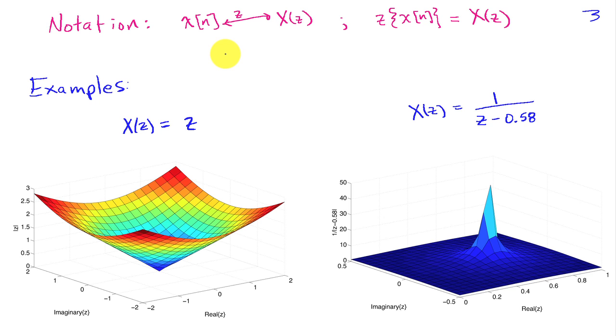Now here's some examples. It's difficult to graph something in four dimensions, because Z is complex, so we've got a two-dimensional plane, and we're graphing then height above that plane, but the height would also be complex. So what I'm showing in these two pictures is the magnitude of X of Z. So if we let X of Z equal Z, then the magnitude of X of Z looks like a cone. At 0, 0, it has amplitude 0, so the magnitude of Z just describes a cone.